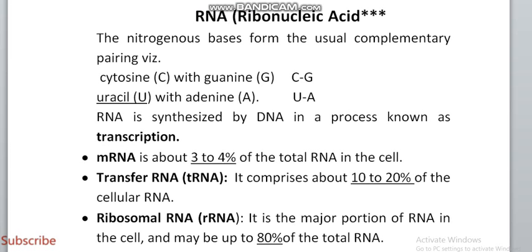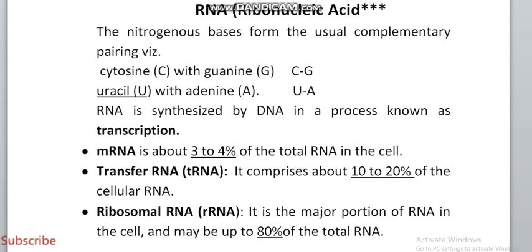RNA is synthesized from DNA through a process known as transcription. In RNA, uracil replaces thymine. There are different types of RNA: messenger RNA (mRNA) is about 3 to 4 percent of total cellular RNA; transfer RNA (tRNA) comprises about 10 to 20 percent of cellular RNA; and ribosomal RNA (rRNA) is the major portion, making up to 80 percent of total RNA in the cell.